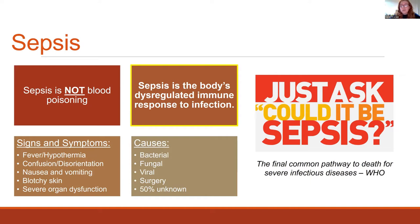Things to look out for in someone suffering from sepsis include fever or hypothermia, confusion or disorientation, stomach pains, nausea and vomiting, and often a blotchy skin rash. Sepsis has been described by the World Health Organization as the final common pathway to death for severe infectious diseases — which really highlights the critical nature of this condition.